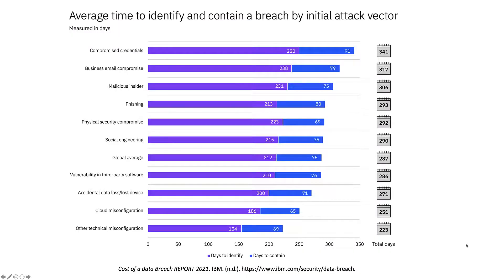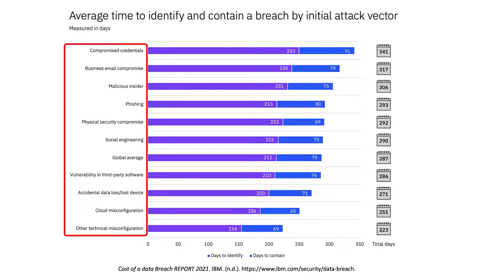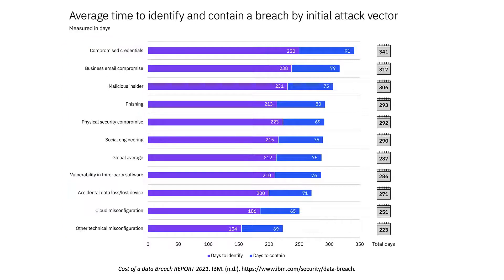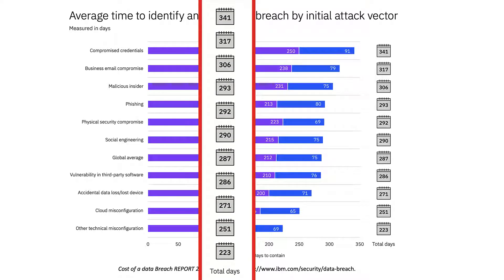The following slide is very interesting because it shows the average time to identify and contain a breach by initial attack vector. On the left you see the initial attack types: compromised credentials — stolen username and password — business email compromise, malicious insider, all the way down to cloud misconfiguration. On the right you see the number of days to identify and contain a breach. It takes 341 days — almost a year — when credentials are compromised. And there is no type of breach that takes less than 220 days to identify and correct.